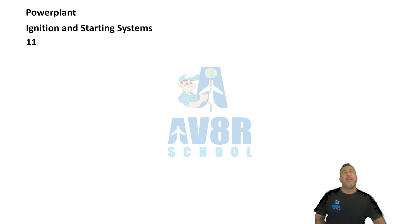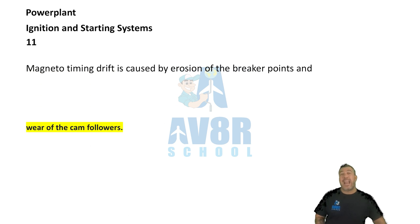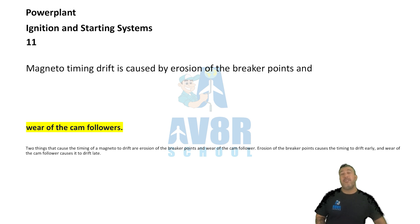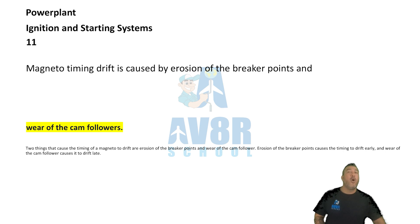Number eleven: Wear of the cam followers. Magneto timing drift is caused by erosion of the breaker points and wear of the cam followers.